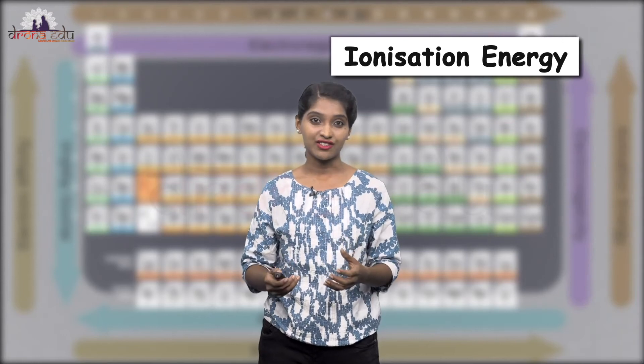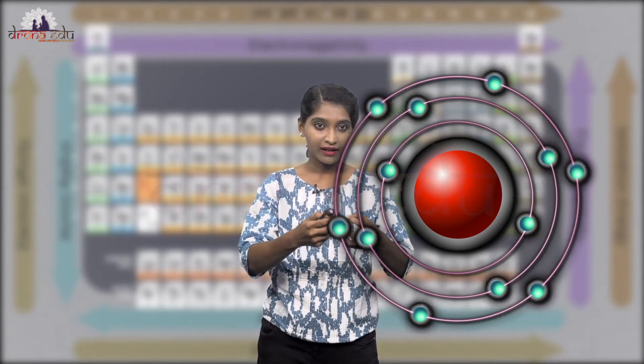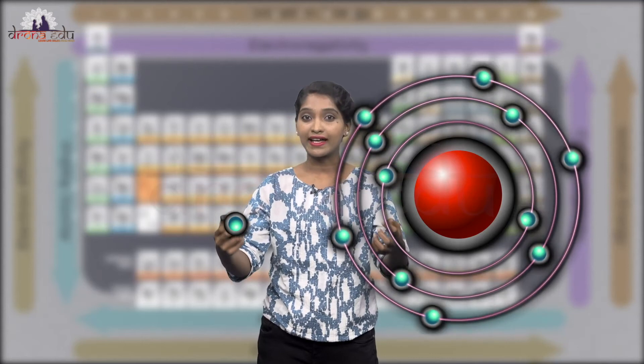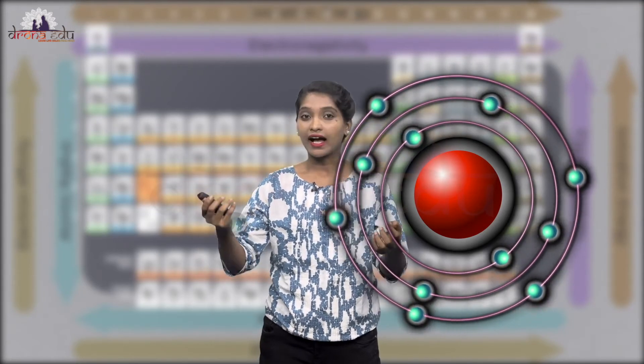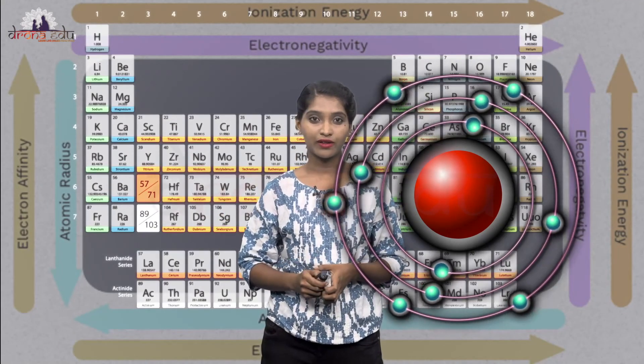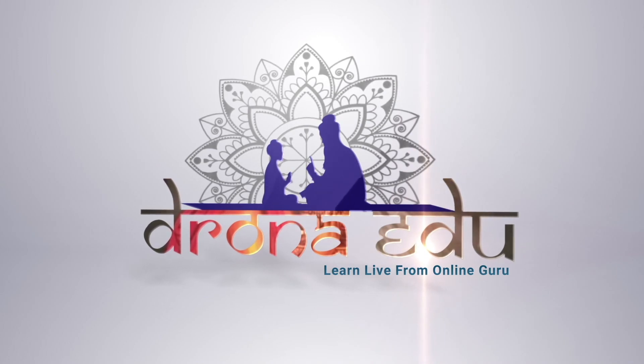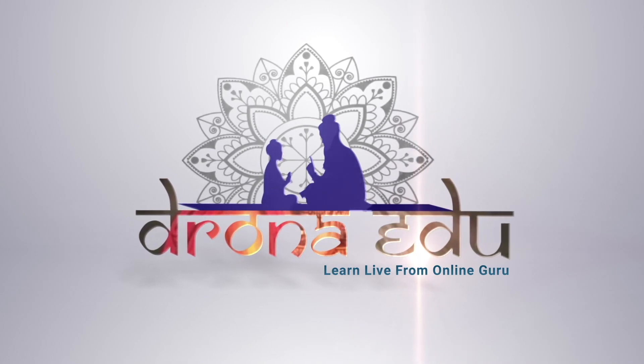Ionization energy, which is also called ionization potential, is the minimum amount of energy required to remove an electron from an isolated atom or molecule. Ionization energy increases across the period and decreases down the group.